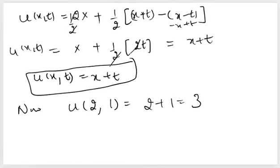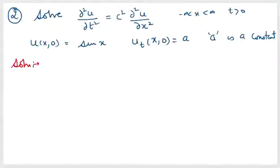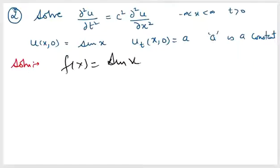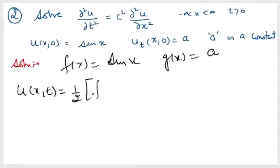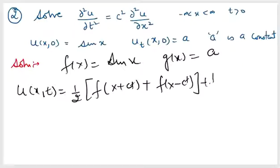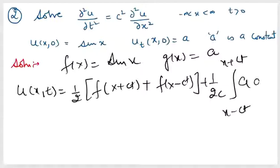Let us see one more example. Here u(x,0) = sin(x) and u_t(x,0) = a (constant), and c² remains as c². So f(x) = sin(x) and g(x) = a (a constant). We plug into the D'Alembert formula: u(x,t) = (1/2)[f(x+ct) + f(x−ct)] + (1/2c) ∫ from x−ct to x+ct of a ds.